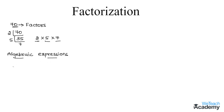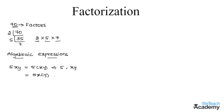First, let us consider an algebraic term which is 5xy. We can write 5xy as 5 × xy, and therefore the factors of this term would be 5 and xy. Similarly, we can write 5xy as 5x × y, and in this case the factors would be 5x and y.